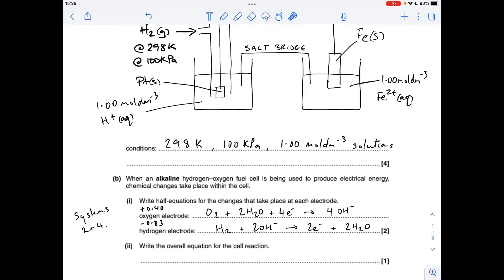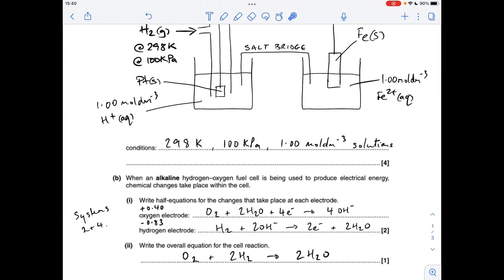Whereas the hydrogen one is going to be written backwards because it's got the less positive electrode potential value. And the overall equation for the cell, obviously we needed to double the hydrogen equation, add it to this, and then cancel down.